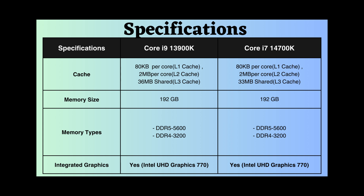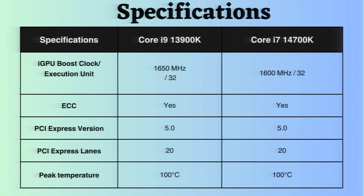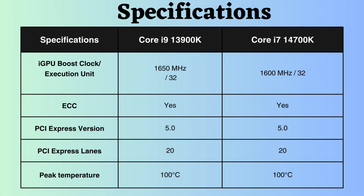They both feature integrated graphics with Intel UHD Graphics 770. Comparing graphics boost frequency, the Core i9 has a boost frequency of 1650 MHz, while the Core i7-14700K has a boost frequency of 1600 MHz.